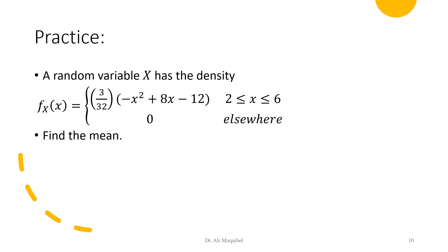I'll leave you with this practice problem: a random variable x has a given density function — find the expectation, i.e., find the mean. Execute the integration; it's straightforward since we have a polynomial. Sketch the function between 2 and 6 to verify your answer. Please note your answer in the comment section so we can compare. See you in coming videos, and thank you for watching.